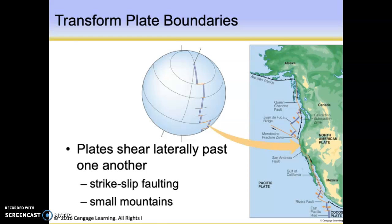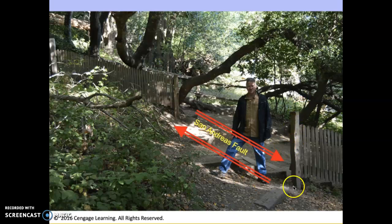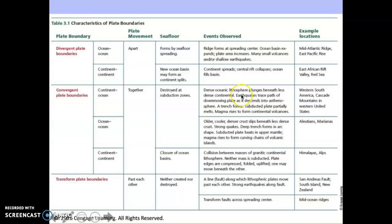What do these faults look like on the ground? This is the San Andreas Fault north of San Francisco, just a few miles before it goes into the Pacific Ocean. This fence — either original or a reproduction — was offset by the 1906 great earthquake that did so much damage to San Francisco. You can see the amount of shift was about 12 feet. The last slide is a summary table from the textbook listing the different types of plate boundaries — divergent, convergent, and transform — showing the types of plates involved, the movement, the types of events observed, and places where you could go to find those types of boundaries.